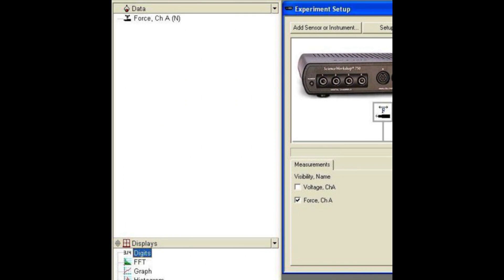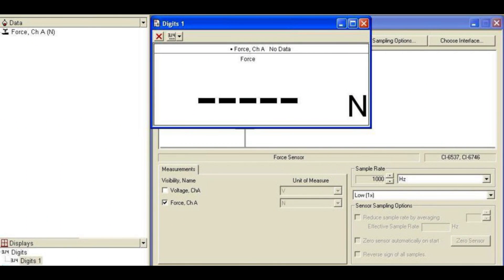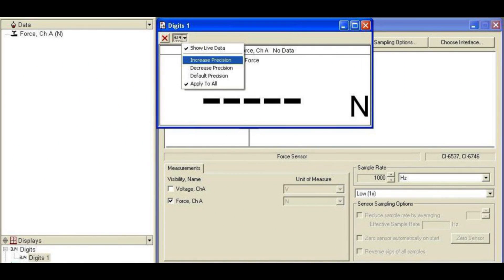Drag and drop the digits icon from the displays area onto the force sensor icon at the upper left. Magnitudes of forces will be displayed in the digits box in newtons. Since more precision is desired, adjust that option in the digits box.